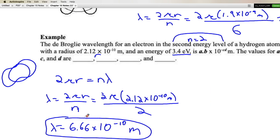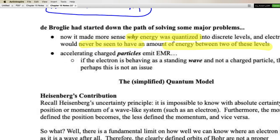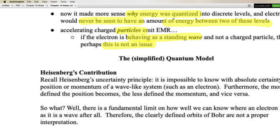Just by understanding that an integer number of wavelengths must fit in, you can solve these. This was an incredible, elegant solution — but it wasn't quite complete. It was the first step toward solving major problems. Now it makes much more sense why energy is quantized into discrete levels — electrons between levels won't produce a standing wave. And it addresses the biggest issue: an accelerating charged particle emits EMR, but the electron isn't acting like a particle here. It's behaving as a standing wave, so perhaps it doesn't radiate EMR. De Broglie is the basis of where we're going, leading to the quantum model, also called the wave mechanical or electron cloud model.